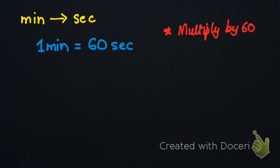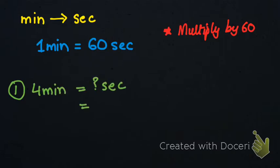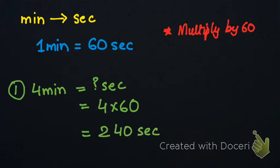Let's take an example. For example, we have 4 minutes and we need to convert it into seconds. So simply what we are going to do is multiply 4 by 60, which equals 240 seconds.